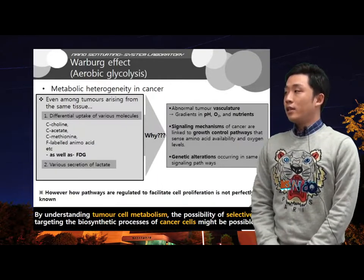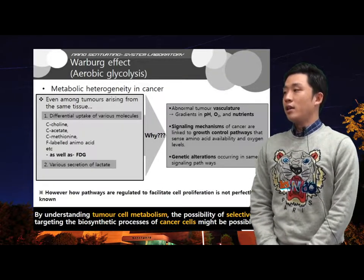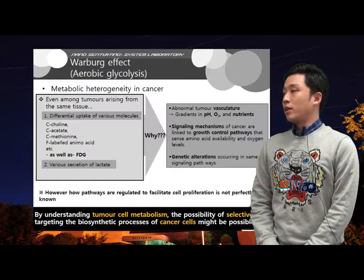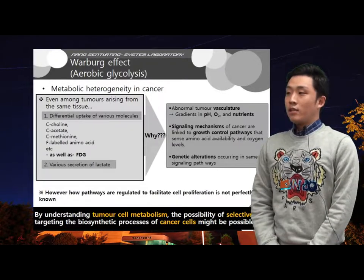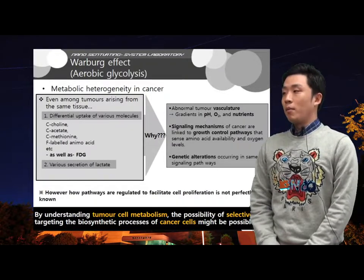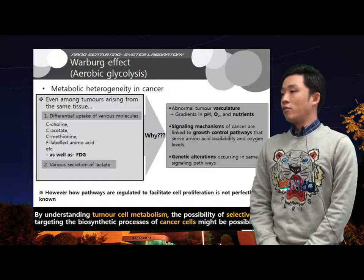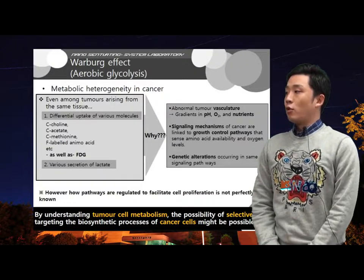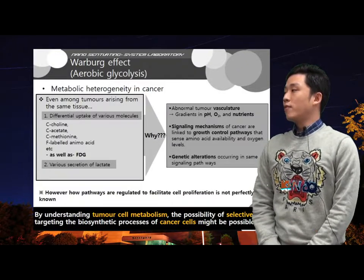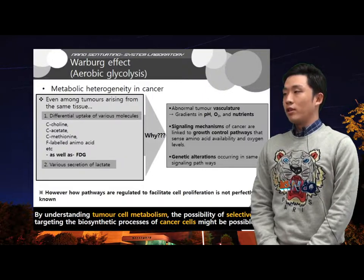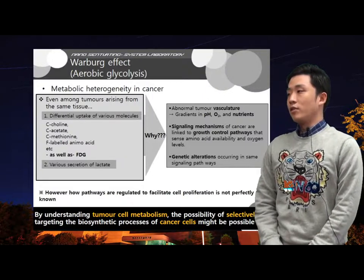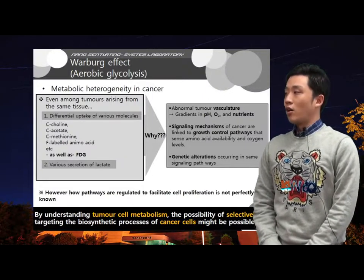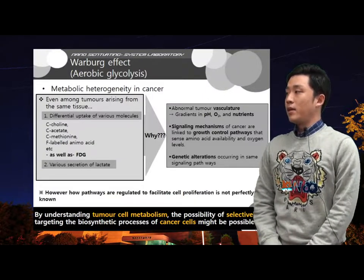Various uptakes of biomolecules and variable secretion of lactate are all observed in cancers in the same tissue. This metabolic heterogeneity occurs because of various reasons. Some of the metabolic heterogeneity is influenced by the tumor microenvironment. Abnormal tumor vasculature can result in gradients of nutrients, oxygen, and pH.